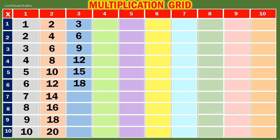3 6s are 18. 3 7s are 21. 3 8s are 24. 3 9s are 27. 3 10s are 30.